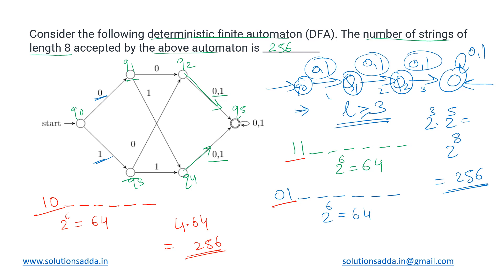So this way also we can do and get the same result. So there are 256 eight-length strings accepted by this DFA. And what is this DFA? It is accepting all binary strings with length at least three. So our answer is 256.